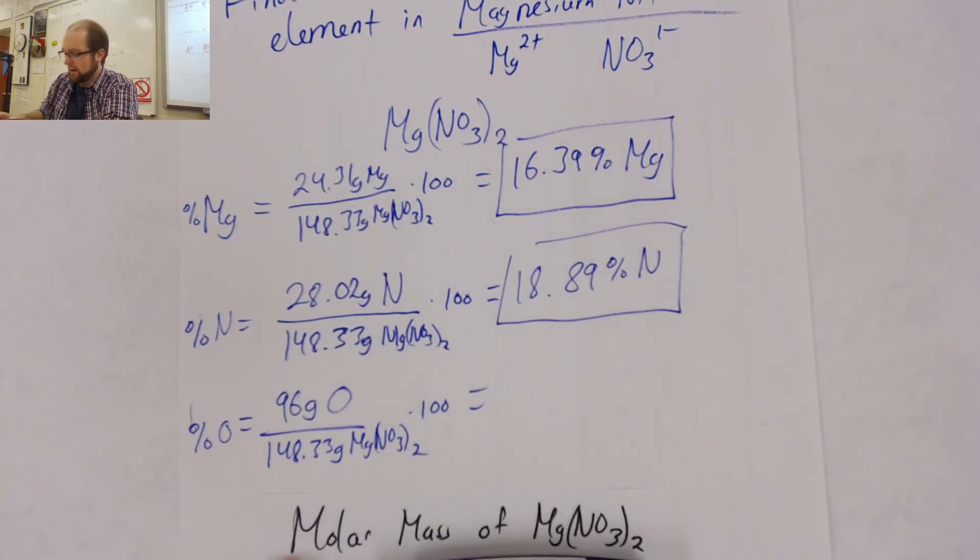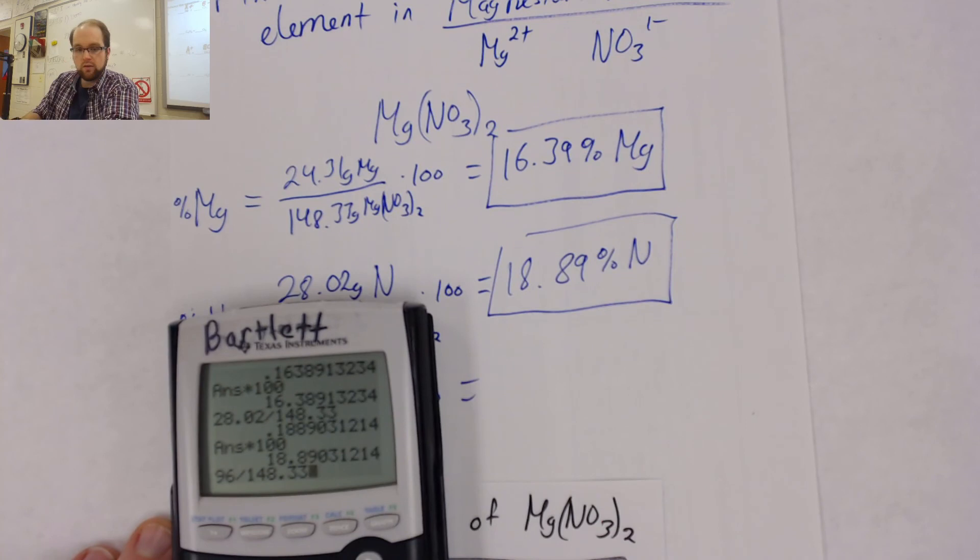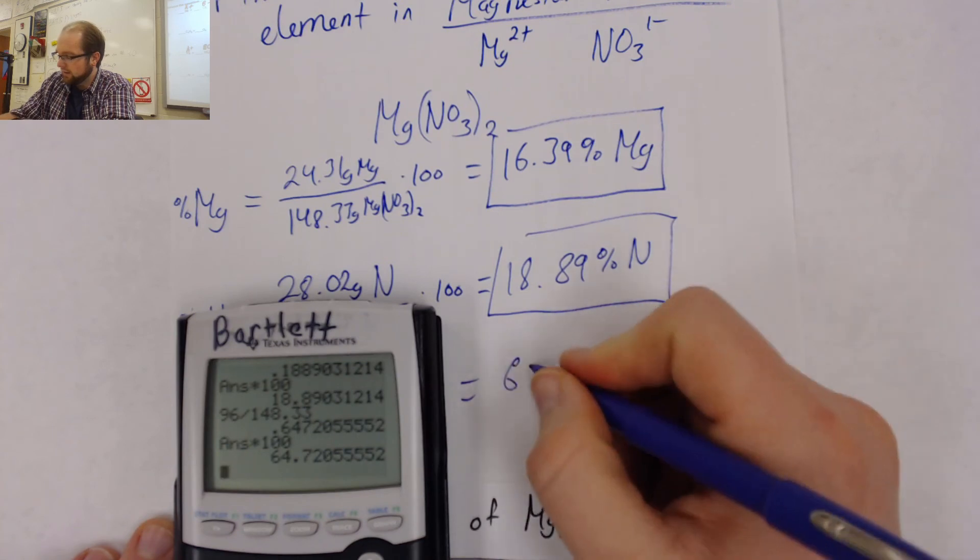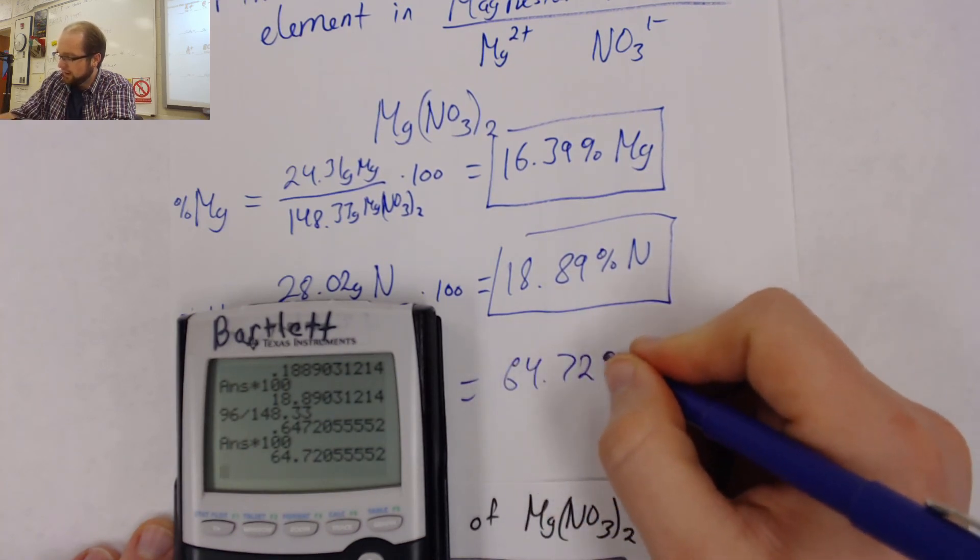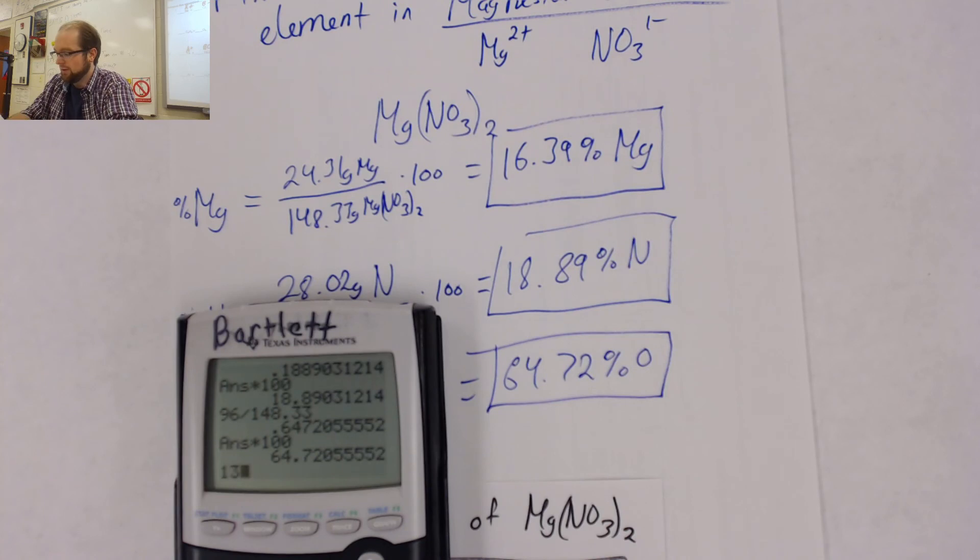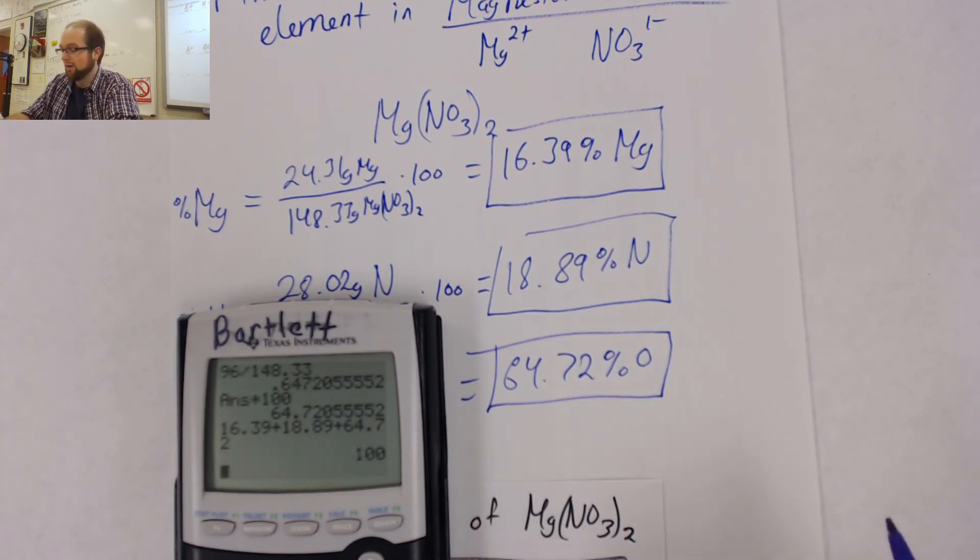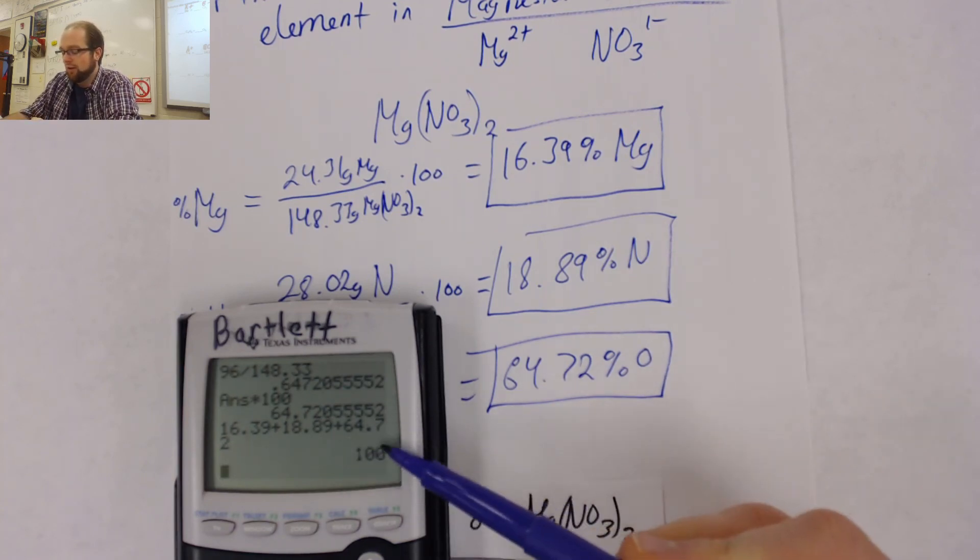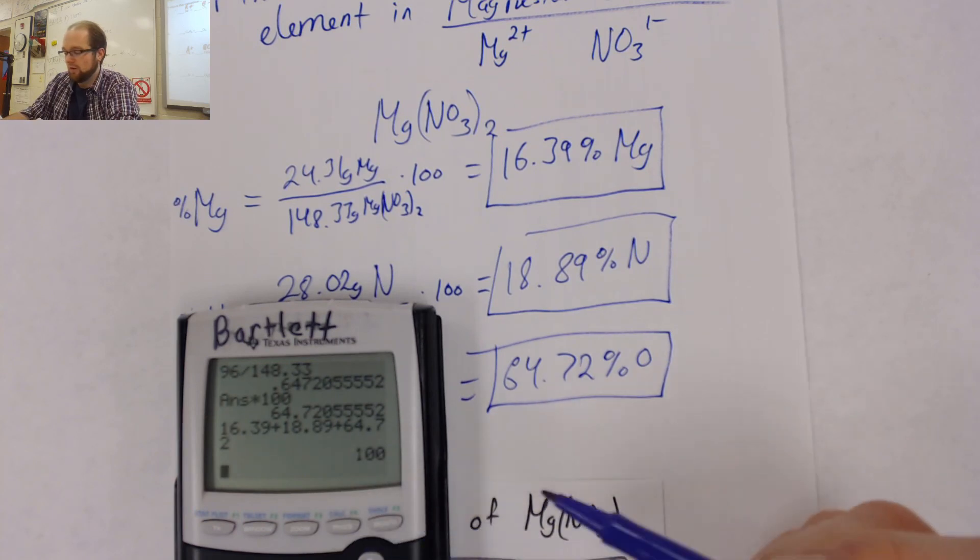Finally, I'm going to have 96 divided by 148.33 times 100. And I get my final percentage of 64.72% oxygen. Our final step is to double-check all of these by adding them all up. And we should hopefully add up to 100. So 16.39 plus 18.89 plus 64.72, I hit enter, and I get exactly 100%. Now, sometimes, depending on your rounding, you might get like a 99.99 or 100.1. As long as you are very close to that 100, you will be showing the correct answer here.